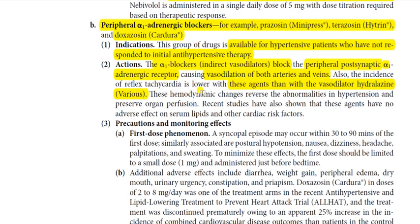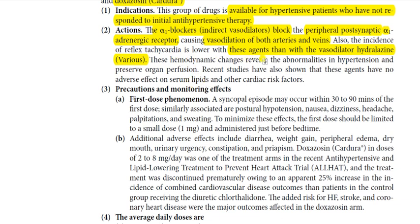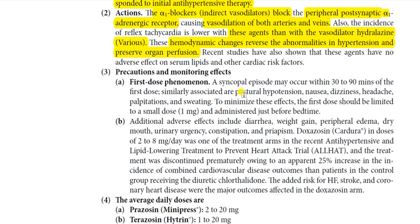With vasodilation, blood pools in the lower extremities, venous return decreases, cardiac output decreases, and blood pressure decreases — but tachycardia is limited with prazosin, terazosin, and doxazosin. These hemodynamic changes reverse the abnormalities in hypertension and preserve organ perfusion. Recent studies have shown that these agents have no adverse effect on serum lipids or other cardiac risk factors.